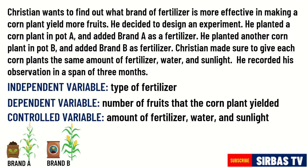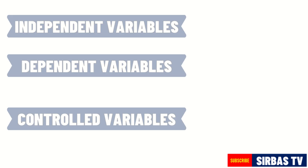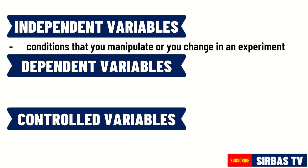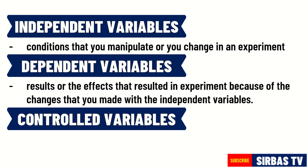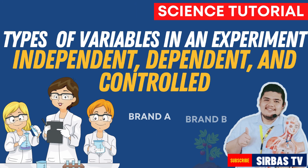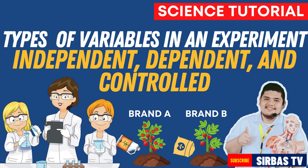And those are the different variables in a scientific experiment. Independent variables are the conditions that you manipulate or change. Dependent variables are the results or effects that come from those changes. Controlled variables are the conditions that you keep the same all throughout the experiment. See you on our next science lesson.